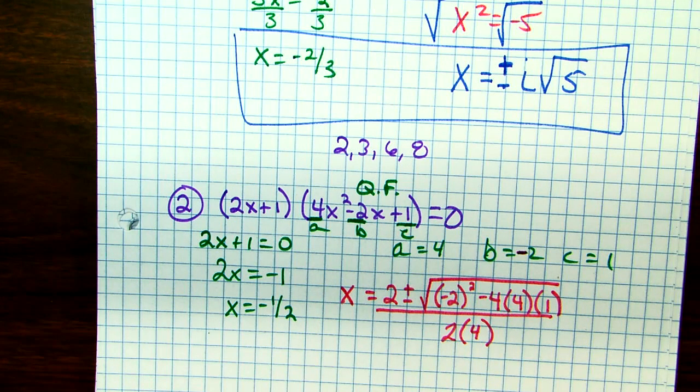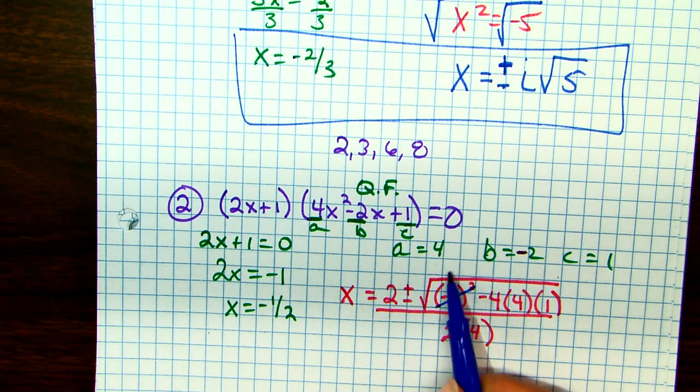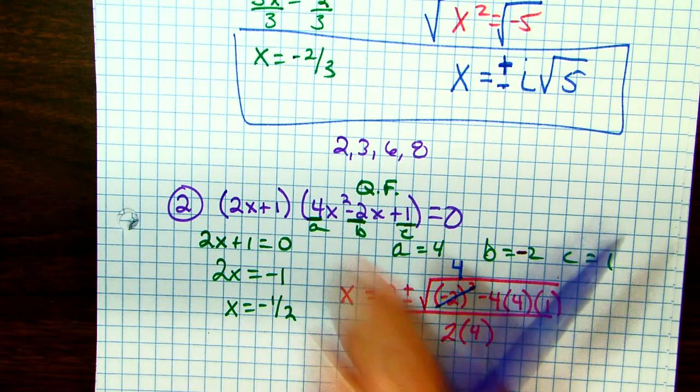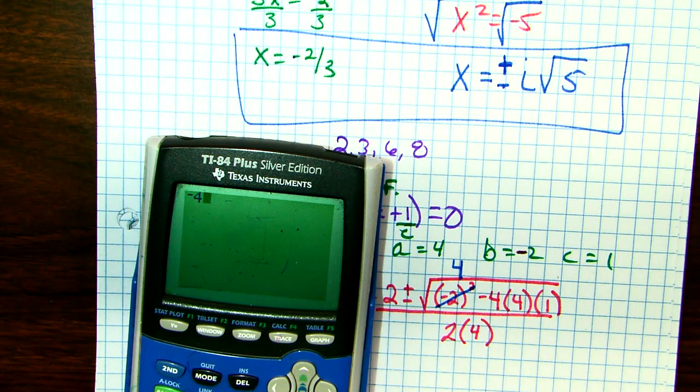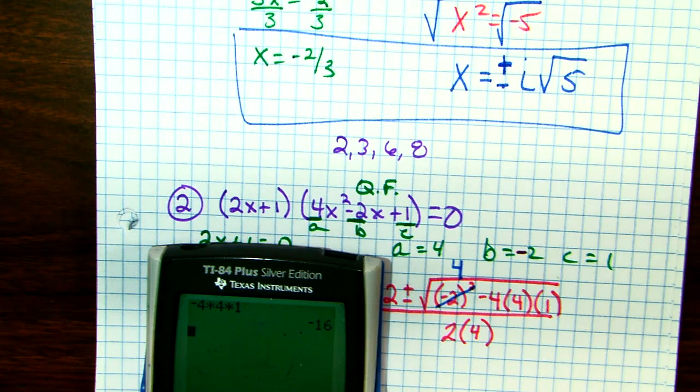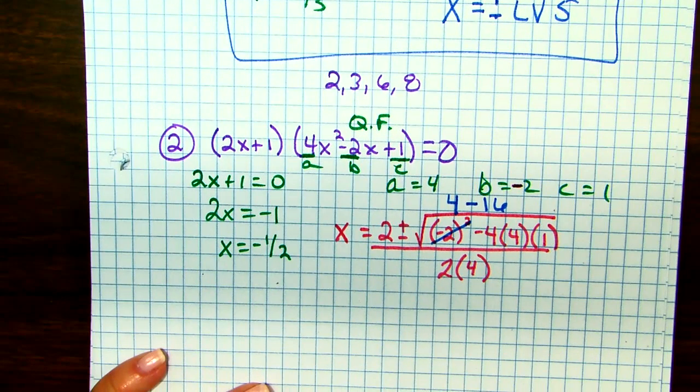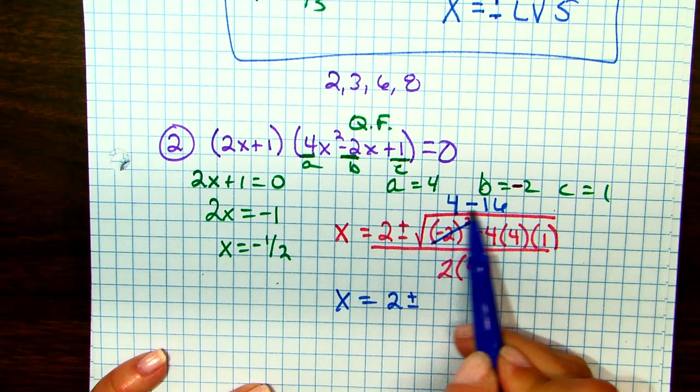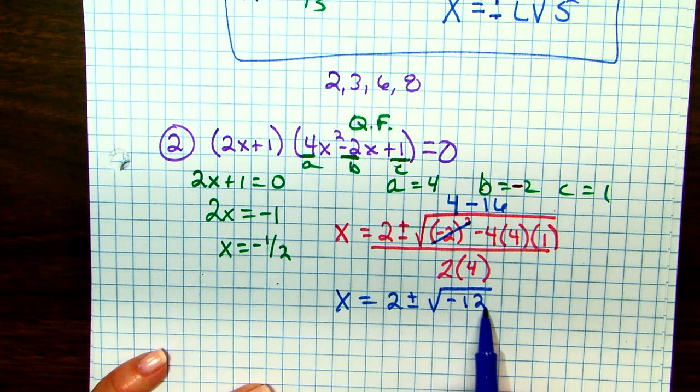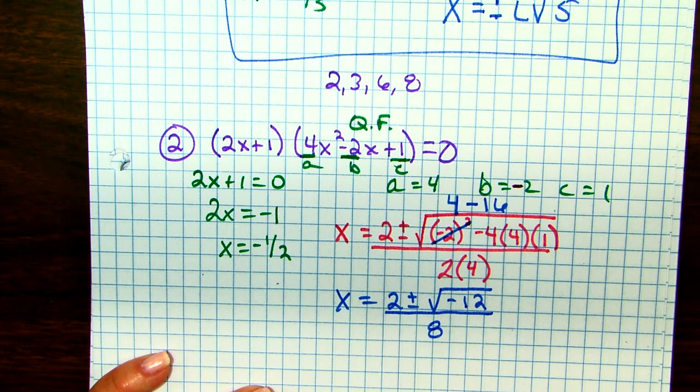Okay? So, after we plug in, we go right to the radical. Okay? Negative 2 squared is positive 4. Two negatives make a positive. That number will never be negative. Then we pick up our calculator. And we do negative 4 times 4 times 1. I always type negative 4 times those two numbers. I got a negative. I write a minus. x equals 2 plus or minus 4 minus 16. When I do 4 minus 16 in my calculator, I get negative 12 over 8.